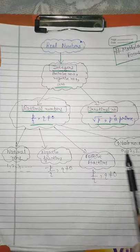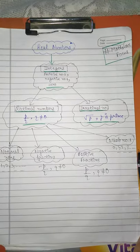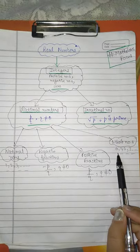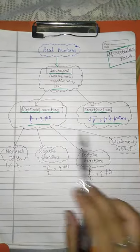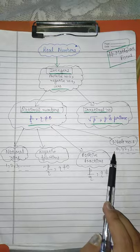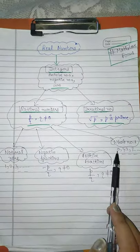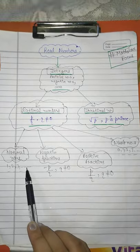Whole numbers are 0, 1, 2, 3 and so on. Zero can be written as 0/1, and since the denominator is not zero, it's a rational number. 1, 2, 3 and so on are natural numbers, so all are rational numbers.